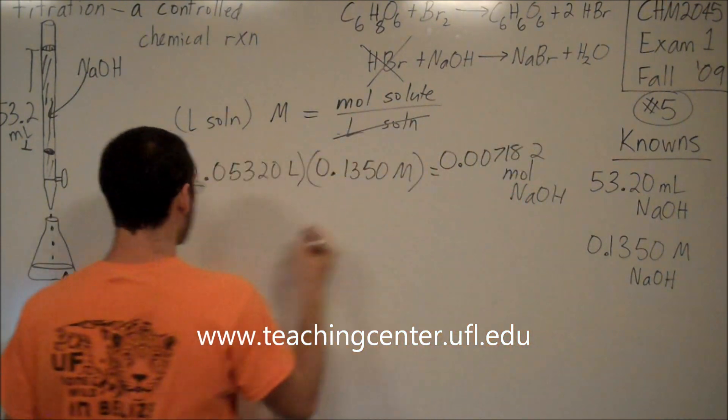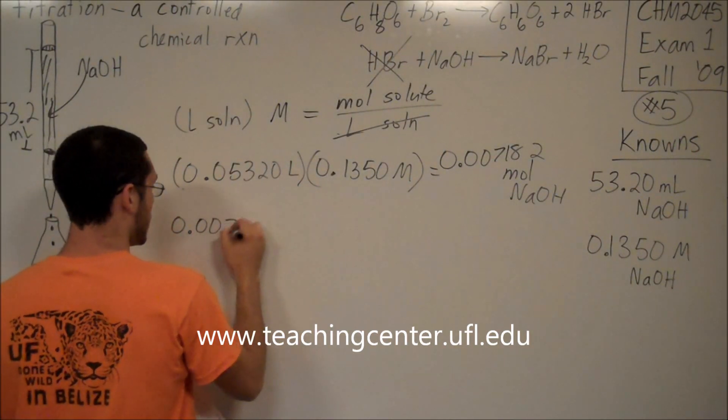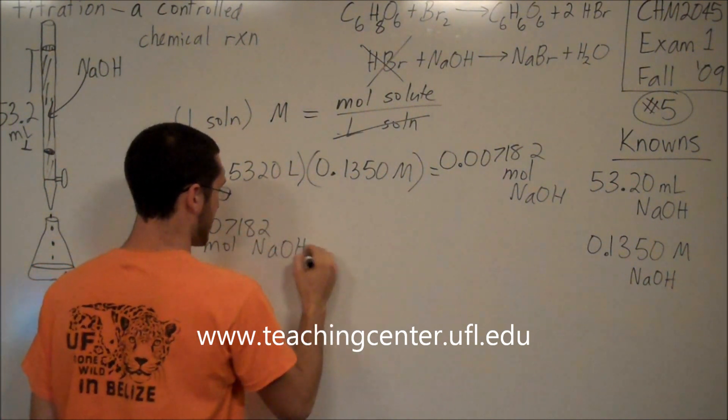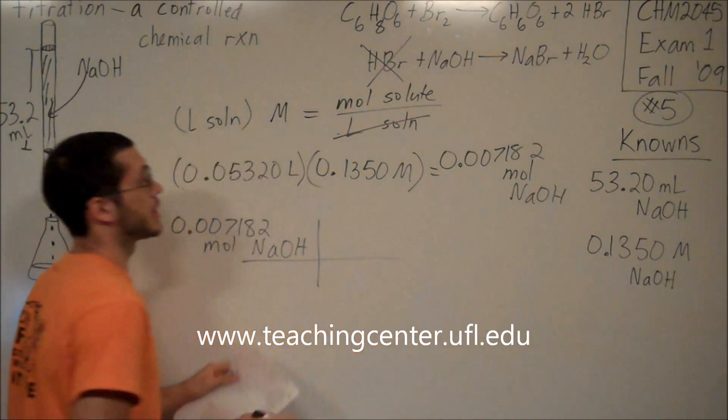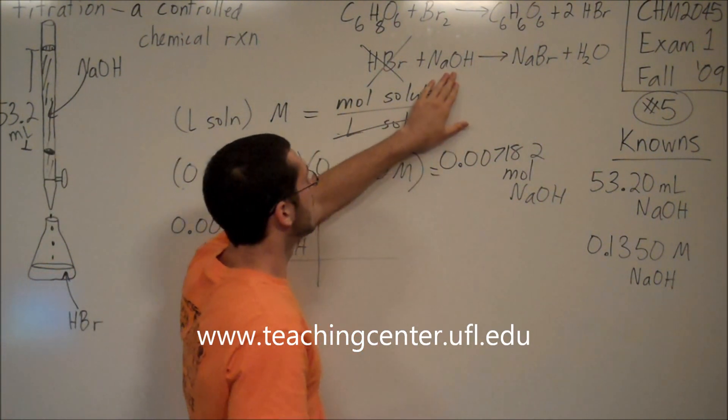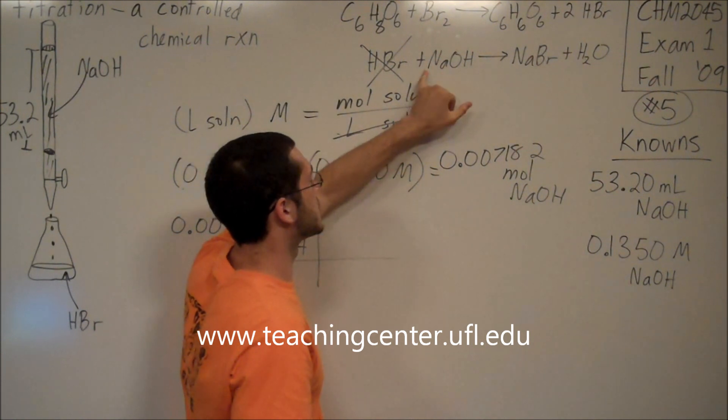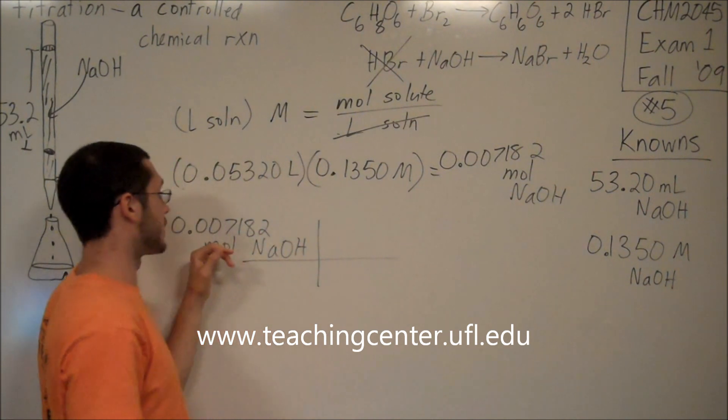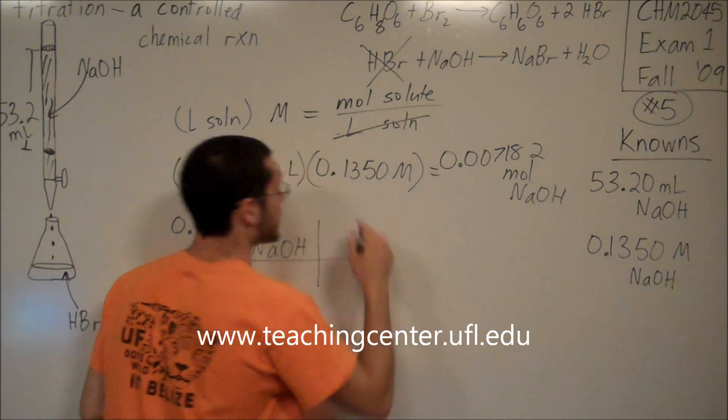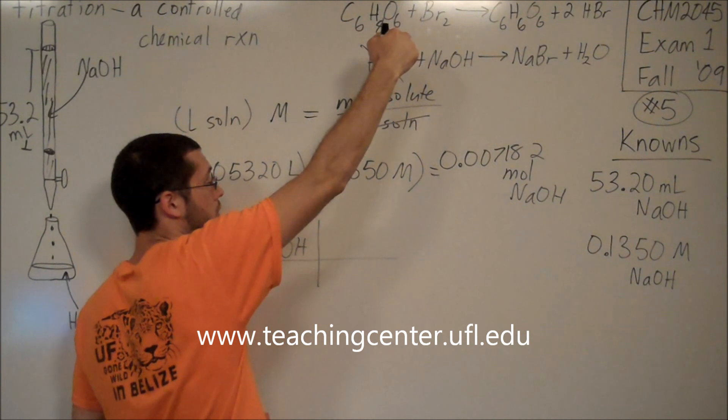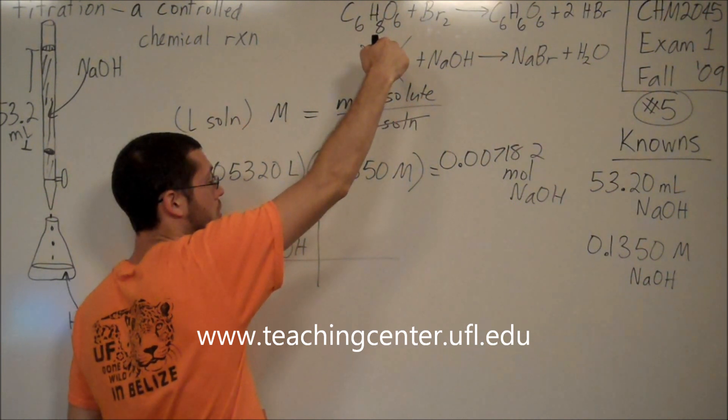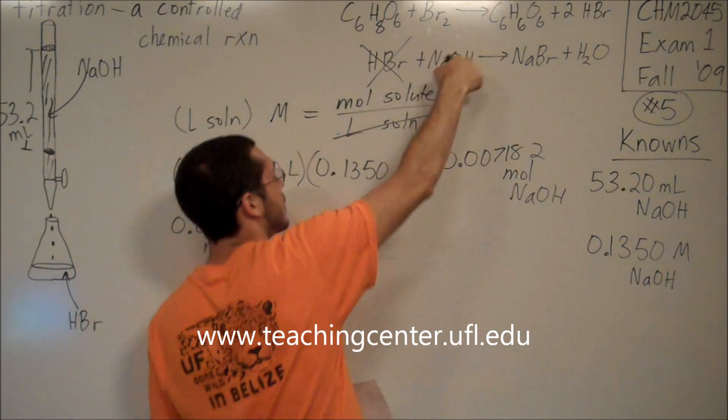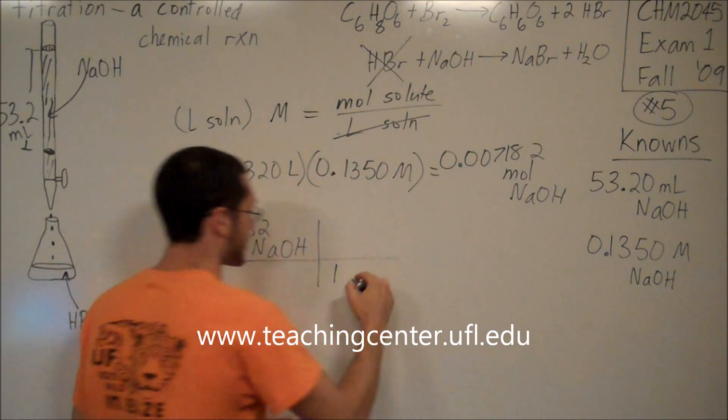Based on this many moles of NaOH, I can now convert all those moles of NaOH. And I can say, oh, well then, since it's a one-to-one mole ratio between NaOH and HBr, it must have taken the same amount of moles, it must have taken the same amount of moles of HBr to react with that many moles of sodium hydroxide.